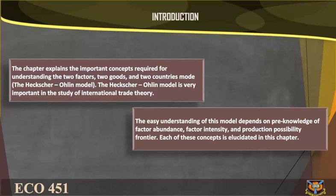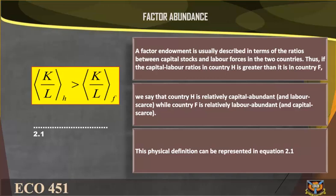Factor Abundance. A factor endowment is usually described in terms of the ratios between capital stocks and labor forces in two countries. Thus, if the capital-labor ratio in country H is greater than it is in country F, we say that country H is relatively capital abundant and labor scarce, while country F is relatively labor abundant and capital scarce.